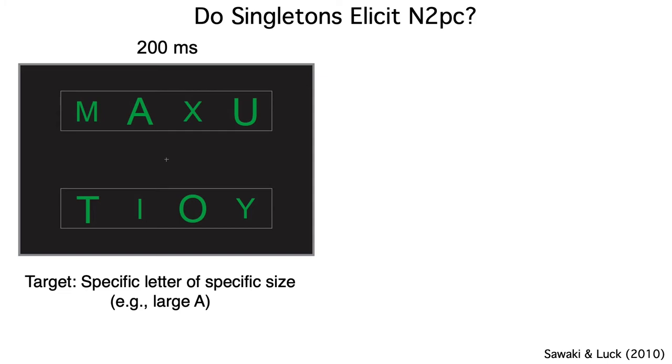The target appeared in 28% of the arrays, and subjects were told to press a button for arrays that contain the target. Because Risa was interested in covert shifts of attention, subjects were instructed to maintain their gaze on the central fixation point and do the task with their peripheral vision.